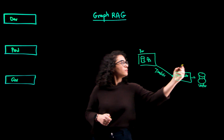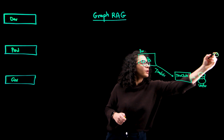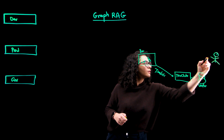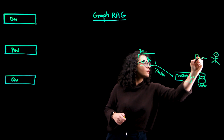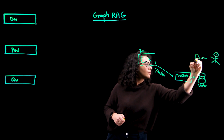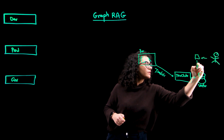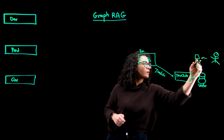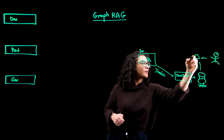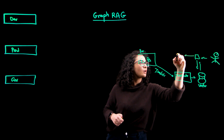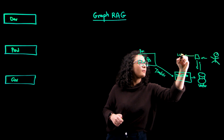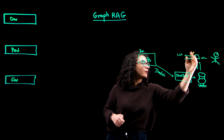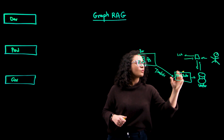Then, when we want to run a query, we use our vector database to extract the context, and then we send that context to our LLM, which then provides the answer.